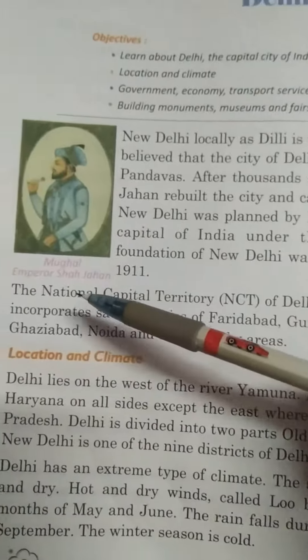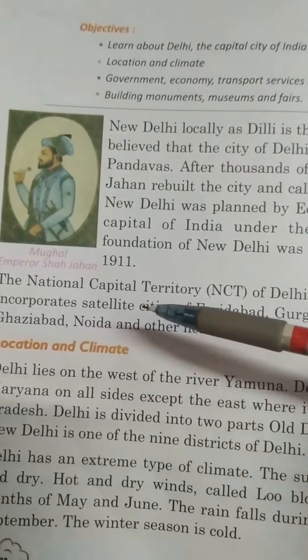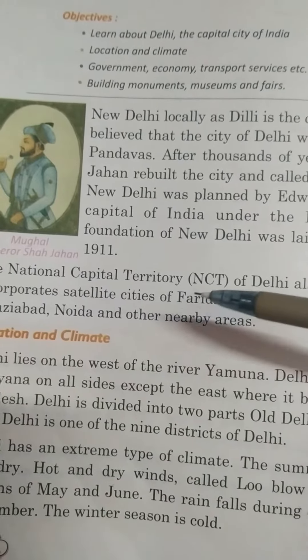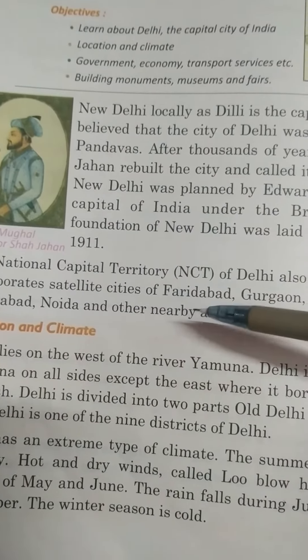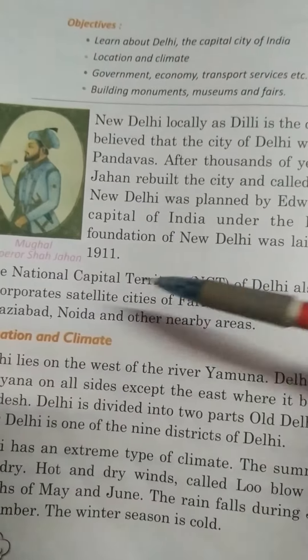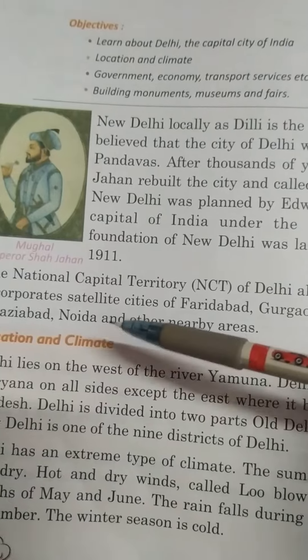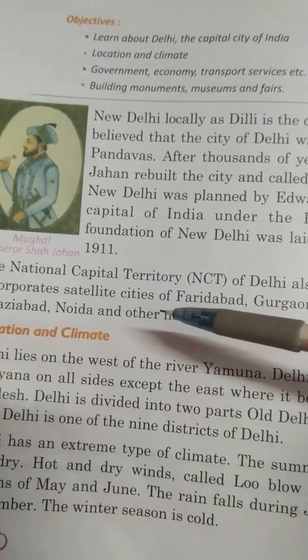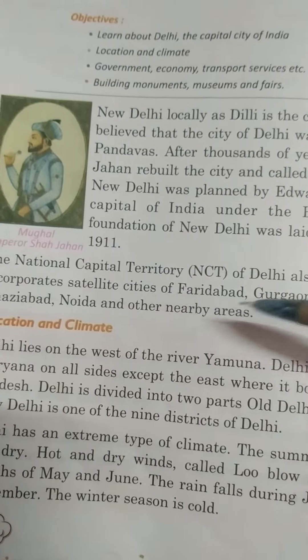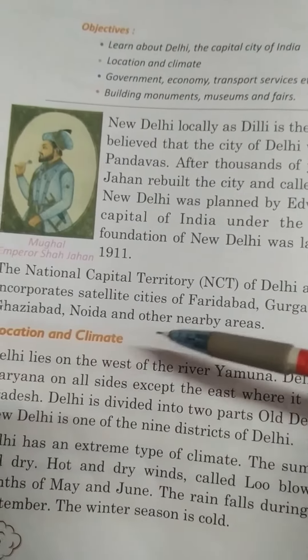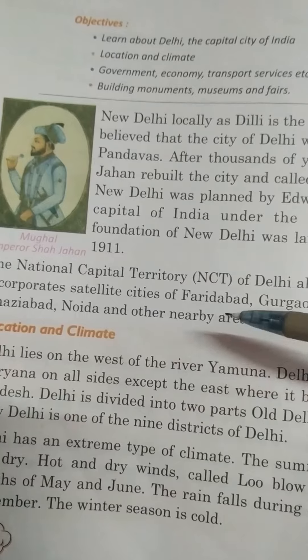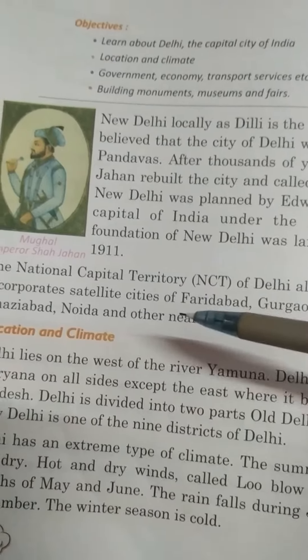The national capital territory and city of Delhi also incorporates satellite cities of Faridabad, Gurgaon, Ghaziabad, Noida and other nearby areas.